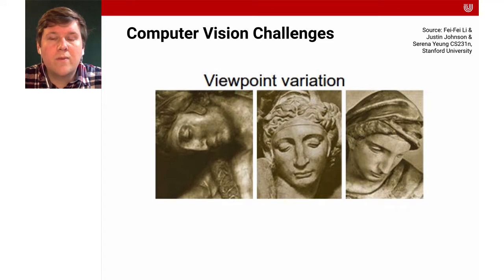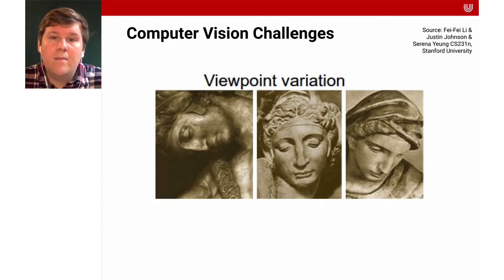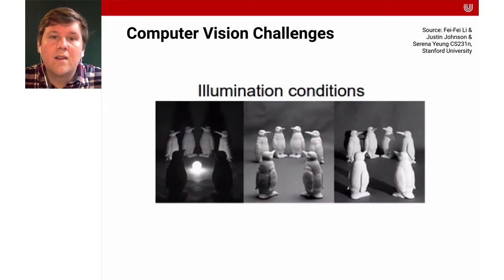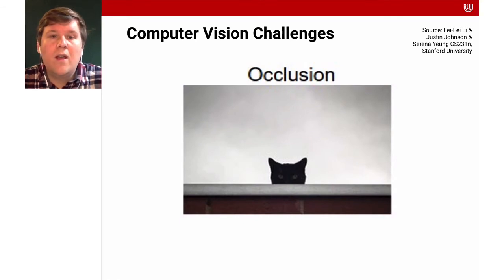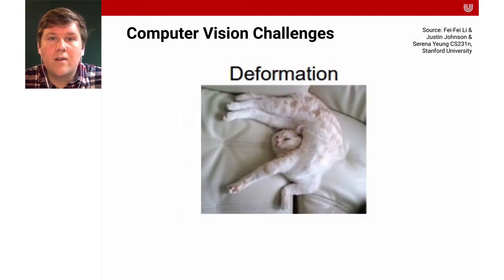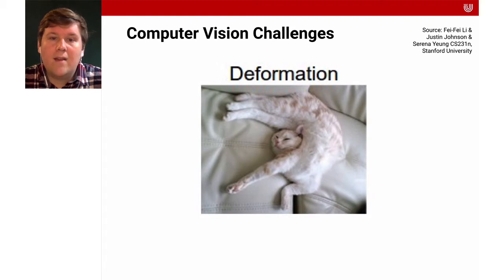There are a variety of challenges with the objects depicted. There can be variations due to viewpoint — this is the same statue but photographed from different angles. We also have different illumination conditions: light changes our perception, adds shadows, and affects detail. There's variation in scale, as different instances of a class like notebooks or humans can vary greatly in size. Occlusion is also a problem — if one object is in front of another, you may not see the full object. And there's the issue of deformation: especially living beings can change their shape very quickly and broadly, as this cat nicely demonstrates.